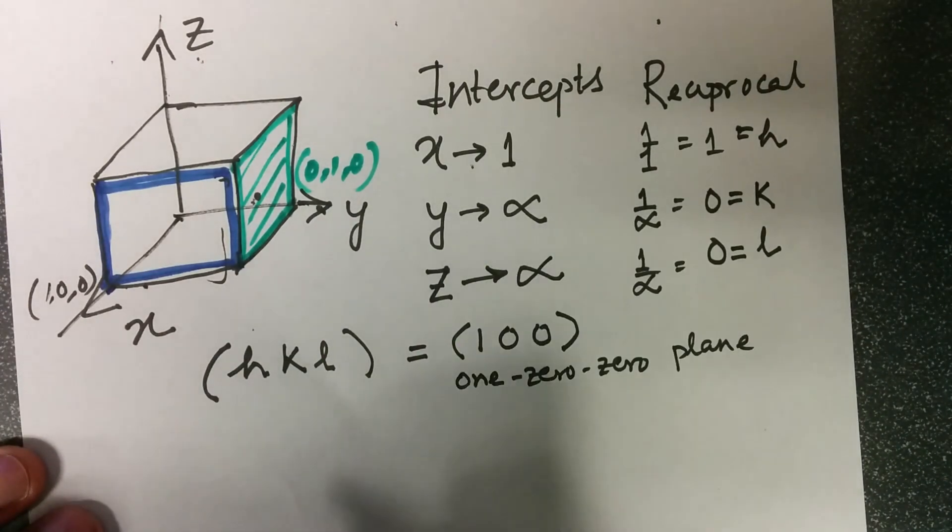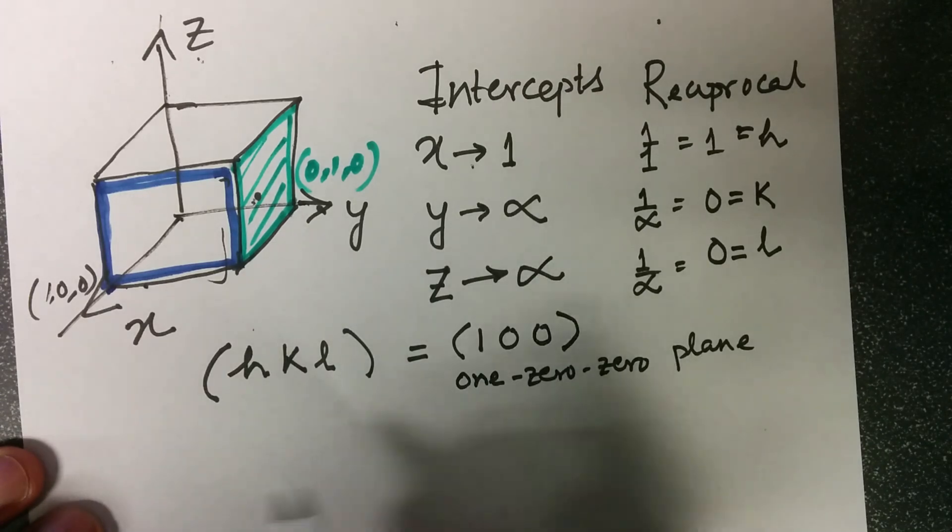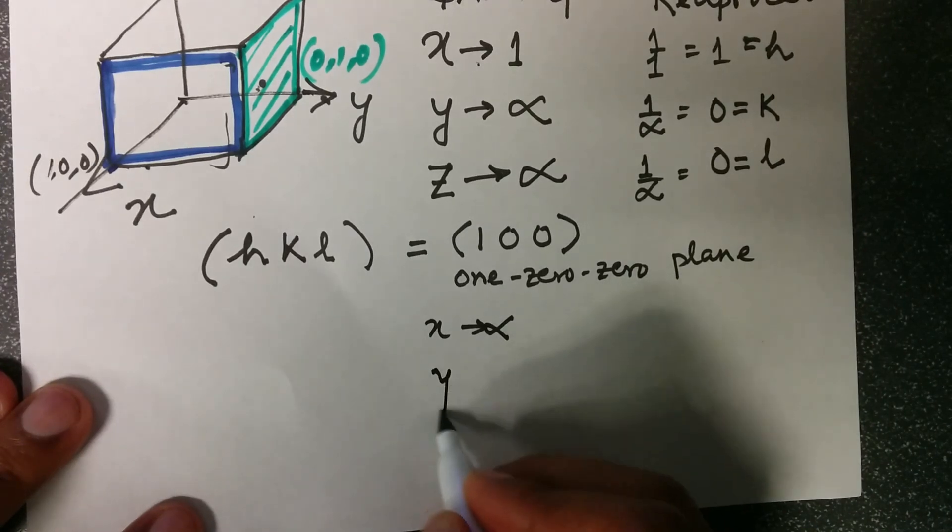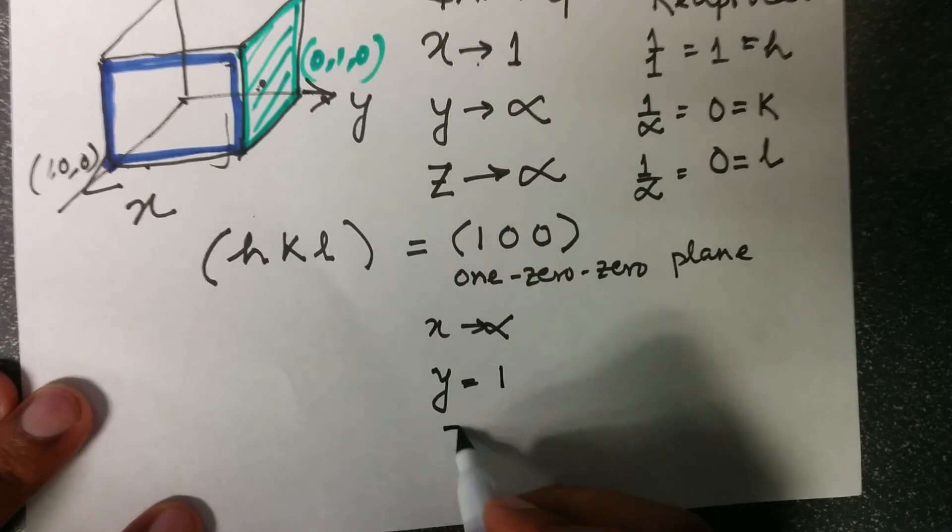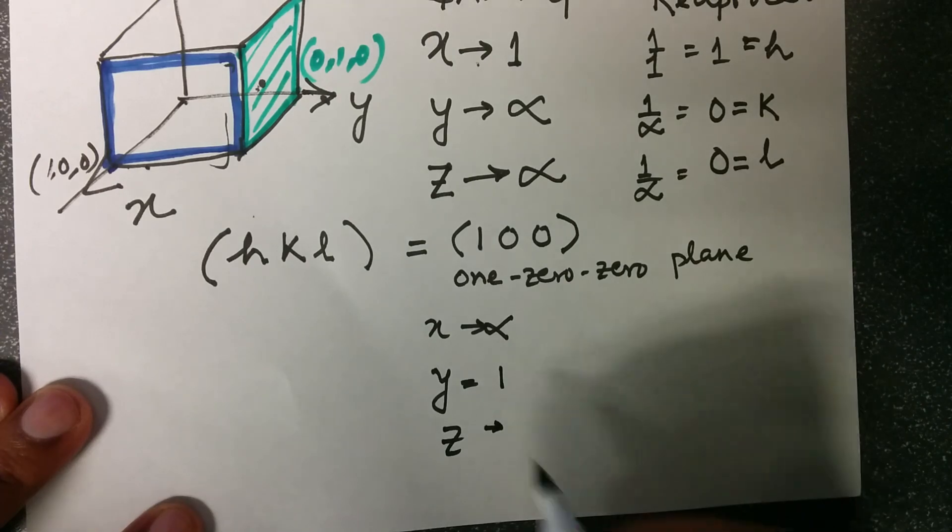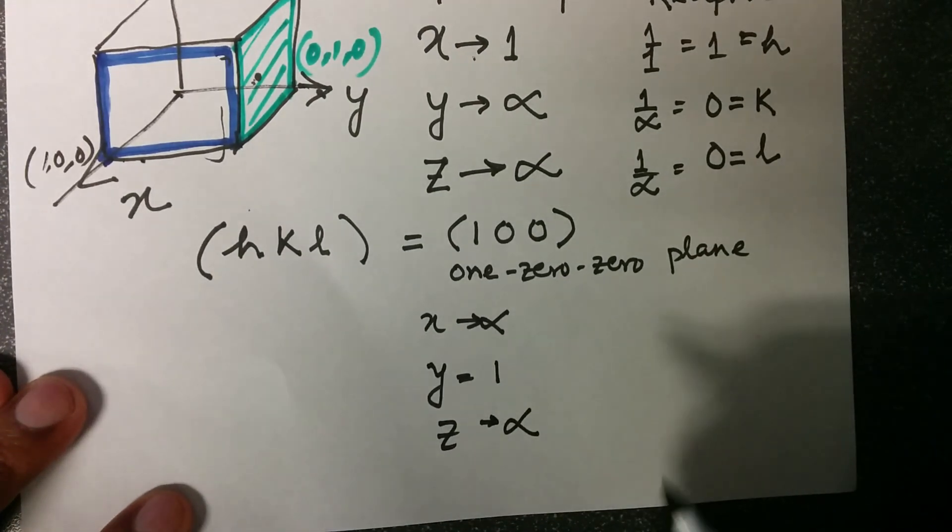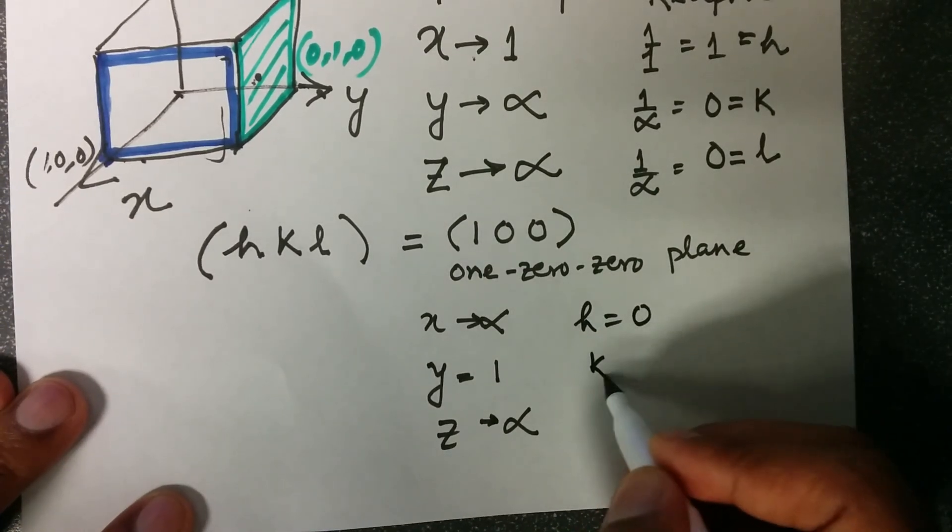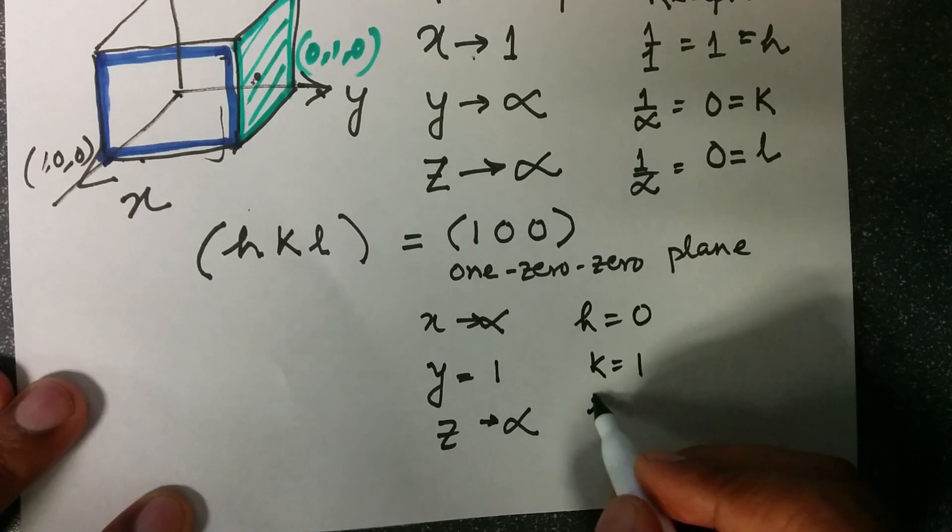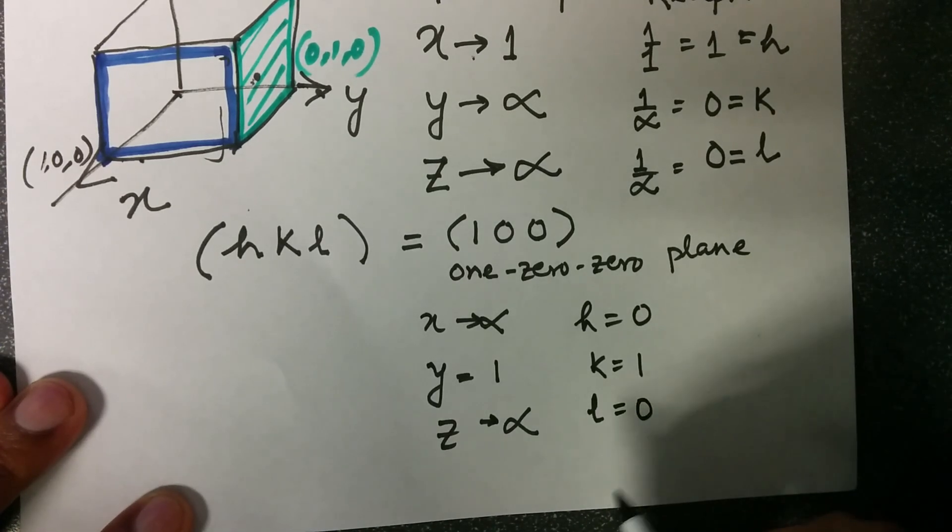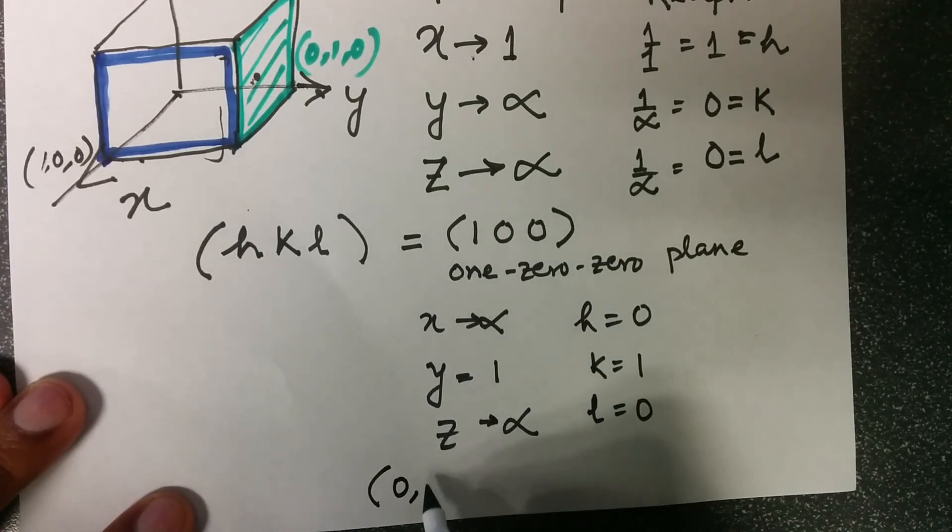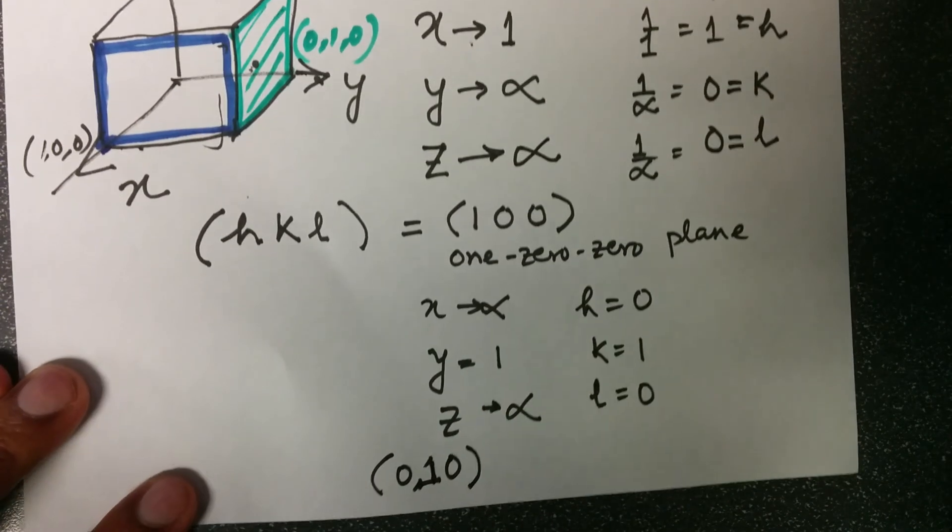Similarly, the x-intercept here will be infinity. The y-intercept here will be 1, and the z-intercept here will be again infinity. Taking the reciprocal, we have h as 0, k as 1, and l as 0. The plane, as you can see from above, will become (0, 1, 0) plane as the Miller indices notation.